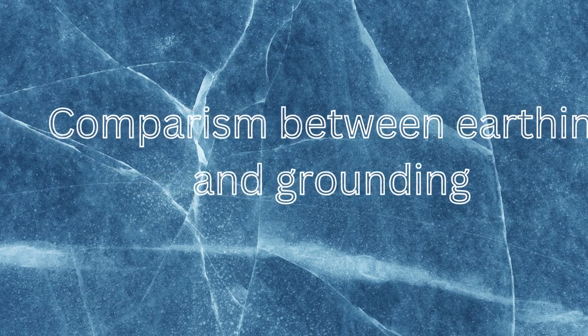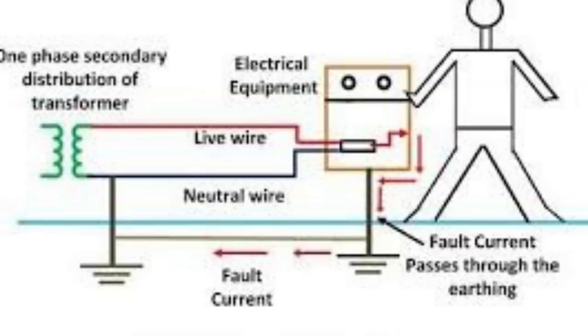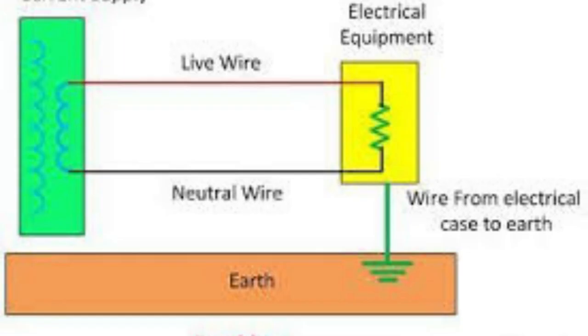All equipment with non-current carrying components, such as the equipment body, are linked to the ground electrode during earthing using an earth wire or earth strip. The equipment has been brought to zero potential in relation to the earth by earthing the equipment's body.